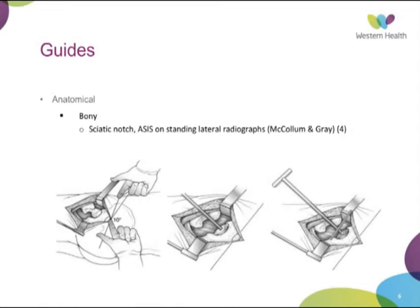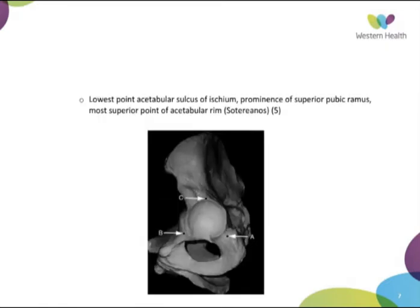The second method is the Soterianos method, which uses three points to align the acetabular component within a defined plane: the lowest point of the acetabular sulcus of the ischium, the prominence of the superior pubic ramus, and the most superior point of the acetabular rim. Clearly some of these landmarks will be difficult to define and they require increased soft tissue dissection.